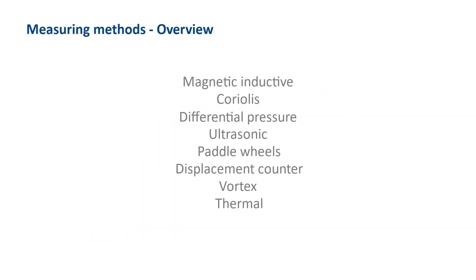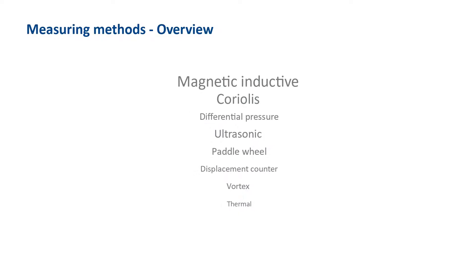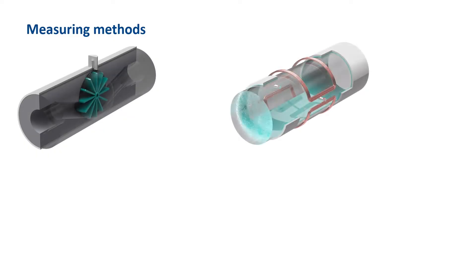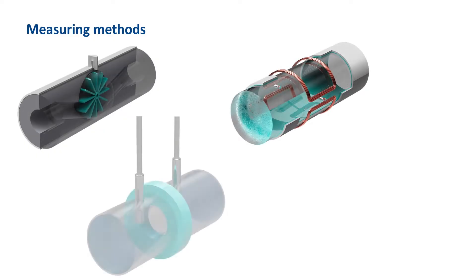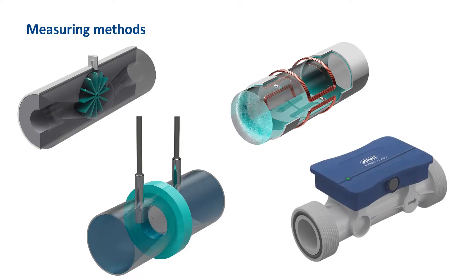Flow rate is probably the measurement with the most measuring methods. Jumo offers flow sensors that use five of the measurement methods shown here, listed in descending order of frequency: pedal wheel sensors, magnetic inductive sensors, differential pressure sensors, thermal sensors, and an ultrasonic sensor.